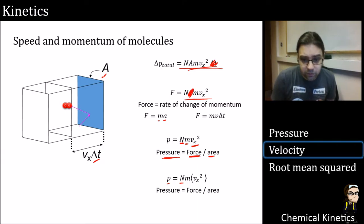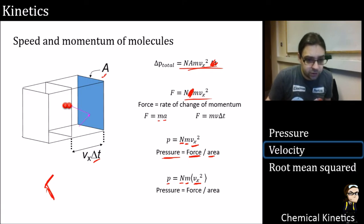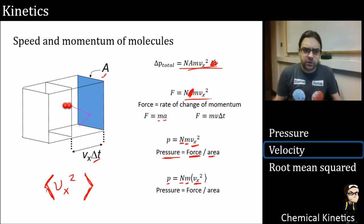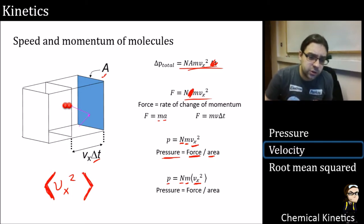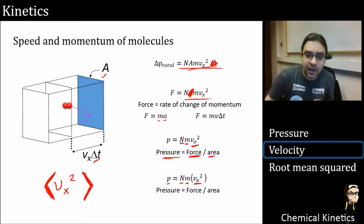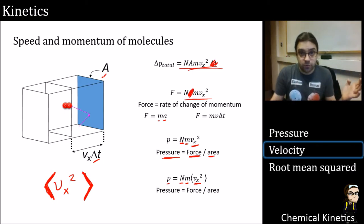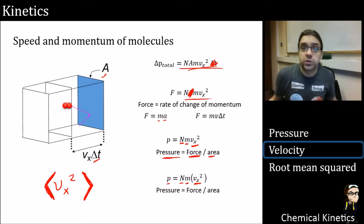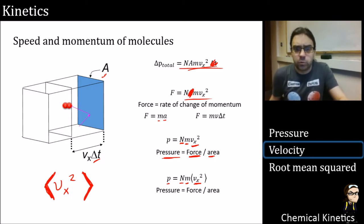Breaking this down further, pressure equals the number of molecules times mass times the average value of velocity-x squared. The angle-bracket notation here means average value — you see it in quantum mechanics and statistics. We use average because some molecules are quite slow and some go a lot faster, but they average out. When we measure all molecules macroscopically in the lab, we just get an average — we can't easily detect differences between very fast and very slow individual molecules.